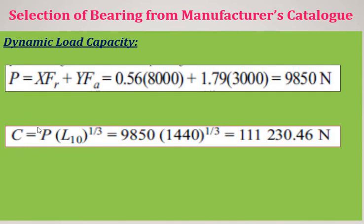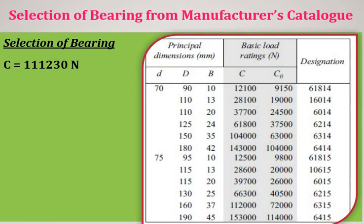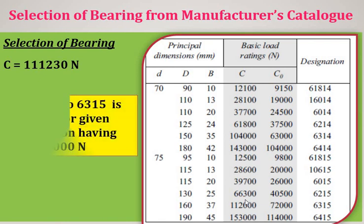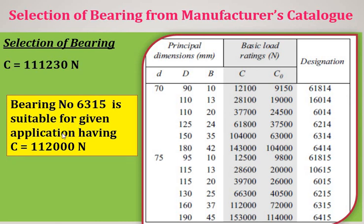Recalculating the dynamic load carrying capacity with the updated P = 9850 N: C = 9850 × 1440^(1/3) ≈ 111,230 N. This is still less than the catalog value of 112,000 N for bearing 6315. Therefore, bearing 6315 is confirmed as the final selection for this application, with dynamic load carrying capacity C = 112,000 N and static load carrying capacity CO = 72,000 N.